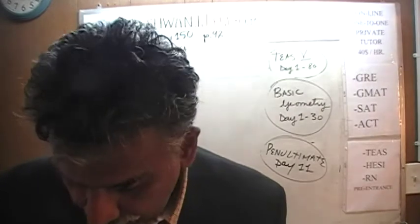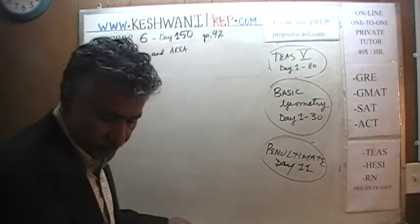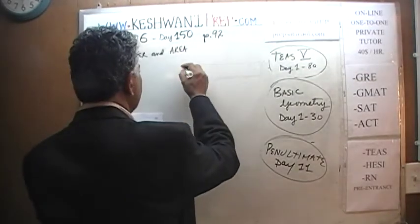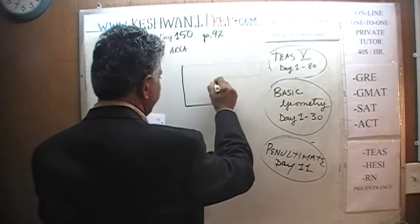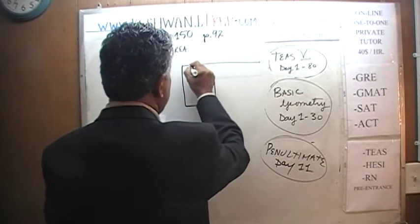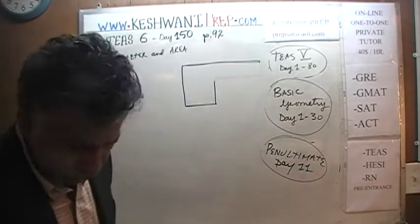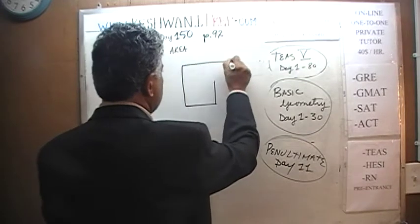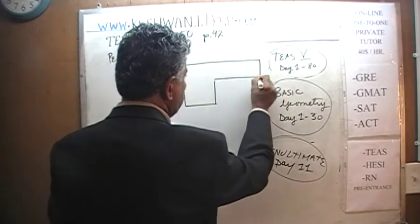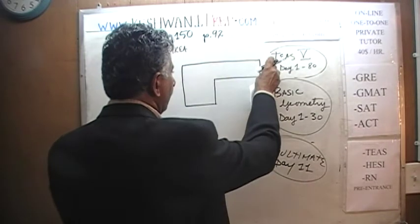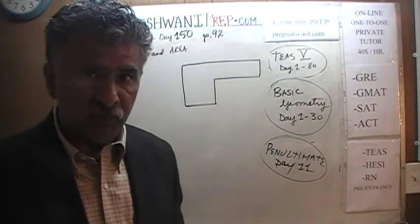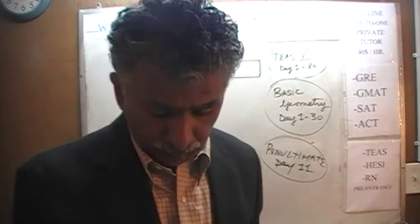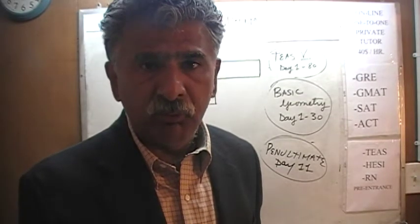Let's get going. Today we will solve a problem that you see on page number 92. There is a figure given to us. The dimensions I'm going to put on the blackboard are different from what you see in the book — I'm doing it on purpose because I would like you to solve the figure in the book yourself.